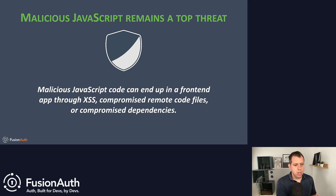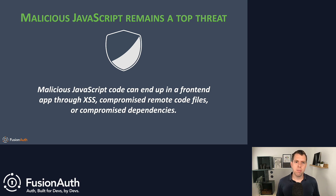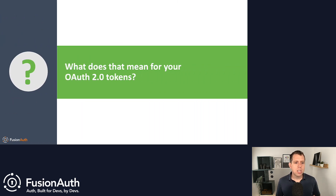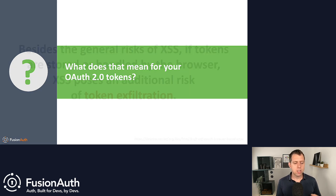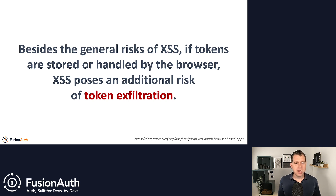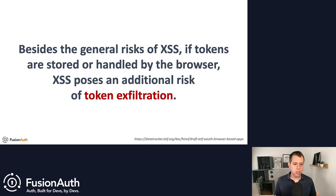History has taught us that while you can do everything in your power to prevent the execution of malicious JavaScript, chances are something is going to go wrong at some point. That's just the nature of the game. So the question that arises is: what does that mean for your OAuth tokens? If malicious JavaScript executes in that front-end app, what is the impact? The browser-based best practices specification talks about the risk of token exfiltration — a very specific consequence of malicious JavaScript executing in the app.